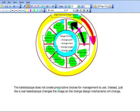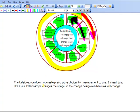Almost in conclusion, the change kaleidoscope, we say down here, the kaleidoscope does not create prescriptive choices. It does not tell us what management has to do. Instead, just like a real kaleidoscope changes the image, so the change design mechanisms will change. So what this is saying is quite just a sophisticated way of saying it depends. The way of dealing with change is, it just depends.